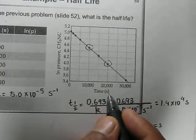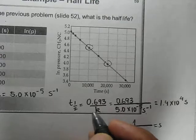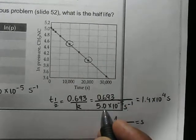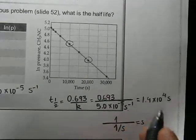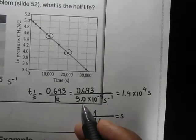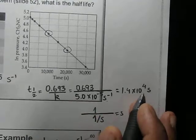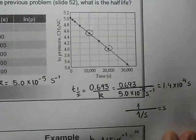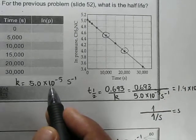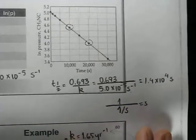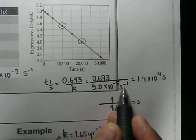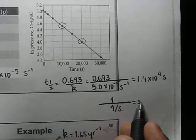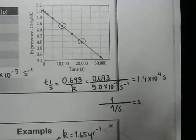As shown in the previous video, the relationship between t½ and k is: t½ = 0.693 / k. Placing k = 5.0×10⁻⁵ s⁻¹ into the equation: 0.693 / (5.0×10⁻⁵) gives 1.4×10⁴ seconds. The unit works out because k is in s⁻¹, so t½ comes out in seconds.